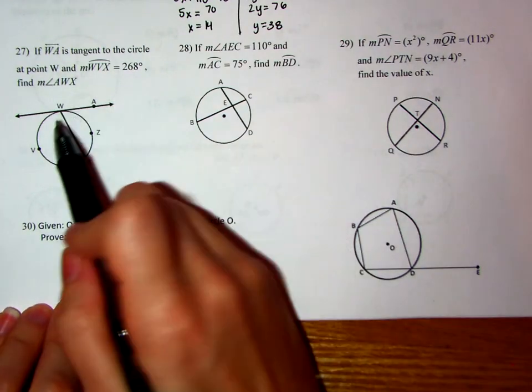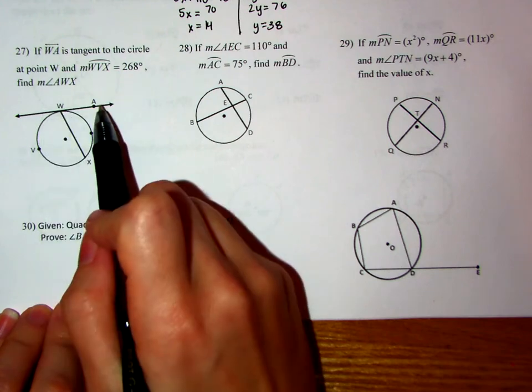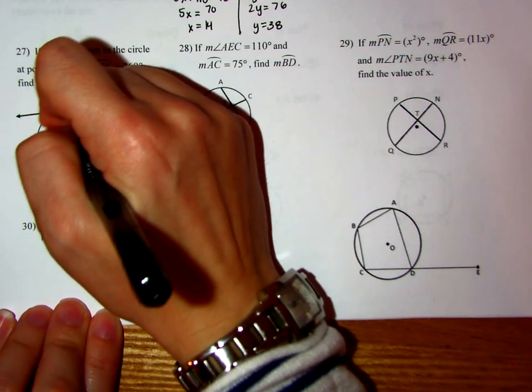On number 27, it says that line WA is tangent to the circle, which means it intersects at this one point right here.